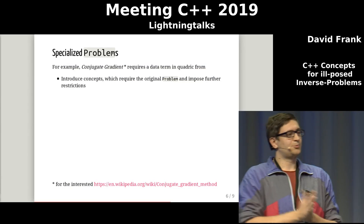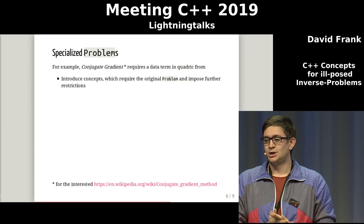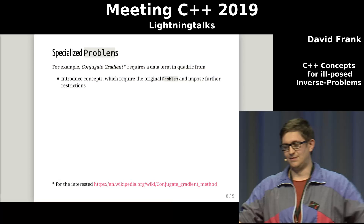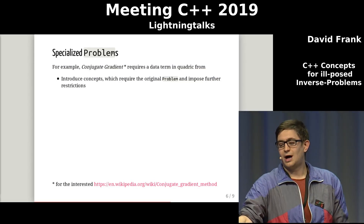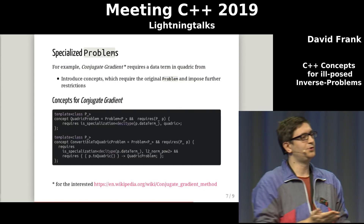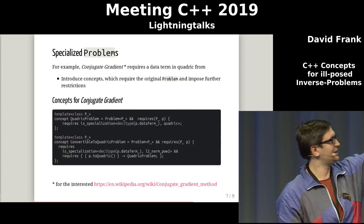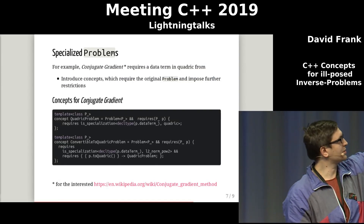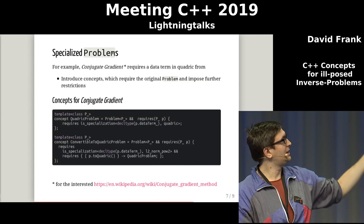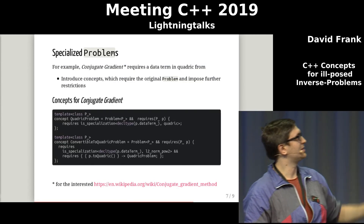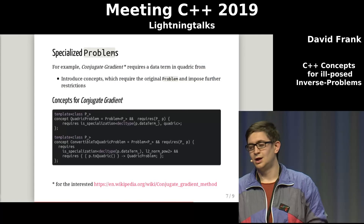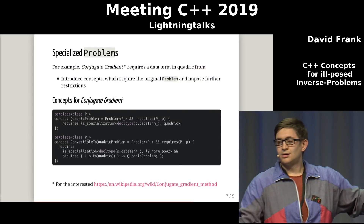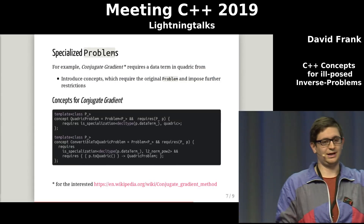For different algorithms, we need special preconditions or constraints on our data term. I want to model them in some way. For example, in the conjugate gradient algorithm, we need the data term to be in quadratic form. So the idea I had was to introduce a couple of new concepts: the top concept, the quadratic problem, requires that it must be a problem and needs a specialization of the data term to be of quadratic form. The second concept does something similar — we want it to be convertible to a quadratic, since we know that for some certain data terms we can convert that. And if one of those two is fulfilled, we know we can calculate the conjugate gradient algorithm on this problem.